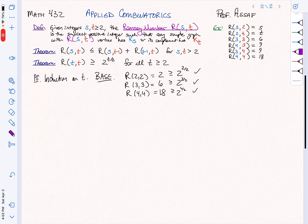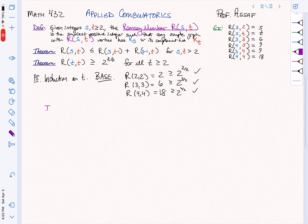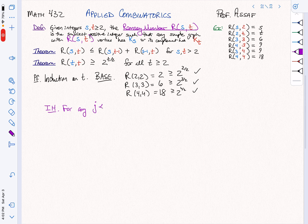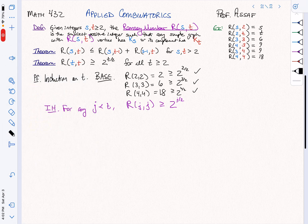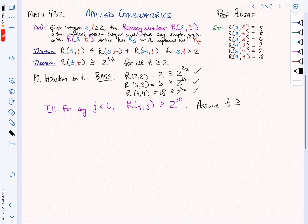Let's go with our inductive hypothesis. What's our inductive hypothesis going to be? It's going to be for any j strictly less than T, we're going to assume the result holds, which is to say that R(j,j) is going to be at least 2 to the j halves. And we can also assume now that T is actually greater than or equal to 5, because we've done lots of base cases.